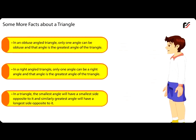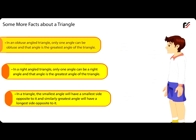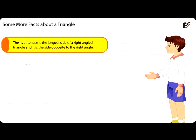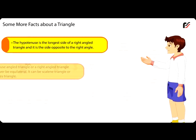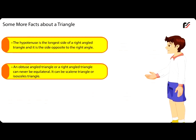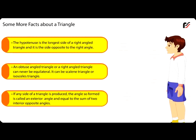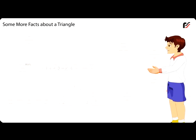In a triangle, the smallest angle will have the smallest side opposite to it, and similarly, the greatest angle will have the longest side opposite to it. The hypotenuse is the longest side of a right-angled triangle and it is the side opposite to the right angle. An obtuse angled triangle or a right-angled triangle can never be equilateral — it can be a scalene triangle or isosceles triangle. If any side of a triangle is produced, the angle so formed is called an exterior angle and equals the sum of two interior opposite angles: angle 1 + angle 2 = angle 4.